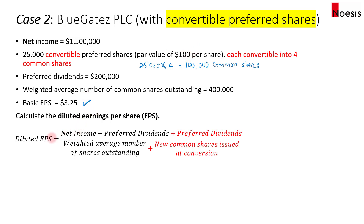Now we'll calculate the diluted EPS. If the preferred shares were converted into common shares, there would be no need to pay the preferred dividends for the year. In the formula, we take net income, and where we previously subtracted preferred dividends for the basic EPS, we now add back the preferred dividends since we assume the preferred shares were converted to common shares — so no preferred dividends need to be paid.